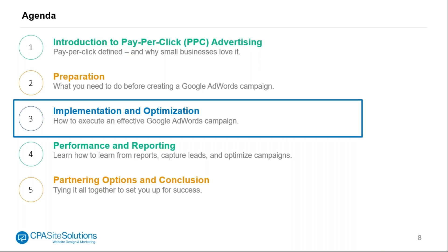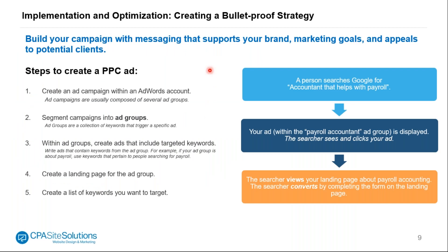Once you've got that set up, think about implementation and optimization. To create and implement a campaign, you'll want to create messaging that supports your brand marketing goals and appeals to potential clients. In order to get there, you'll need to understand what keywords are being searched, have a list of those keywords, and weigh them out using planning software to see how much competition a keyword may have and how expensive it may be, to get an understanding of how much budget you may need.